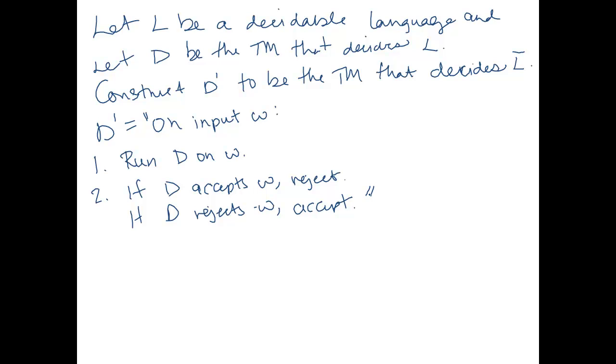Notice that this will not work if L is recognizable but not decidable, because in order to accept, we need to get a rejection from D. And if D is a recognizer, it may not give us this rejection. It might run forever, and then we would not be able to accept. Okay, so this does not work for recognizable languages, only for decidable languages.